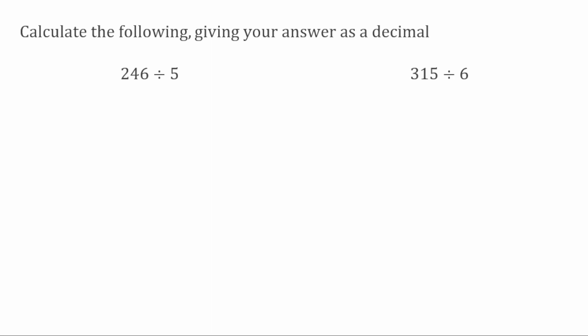For this first question we've got 246 divided by 5, so I'm going to set this up in the usual way. To begin with I want to see how many times does 5 fit into 2? Well it doesn't, so I'm going to carry this 2 over to the next digit. I then want to see how many times does 5 fit into 24? Well this will go 4 times, because 5 multiplied by 4 gives me 20. We needed 24, that leaves us with a remainder of 4, so we bring that over to the next digit.